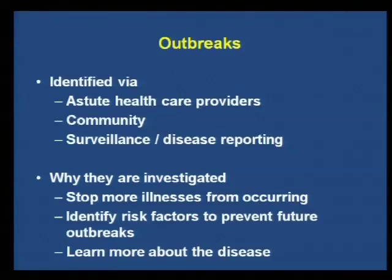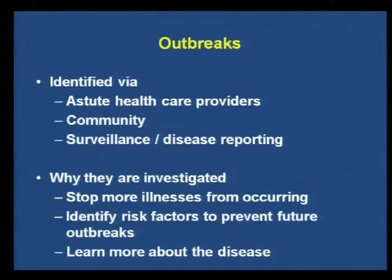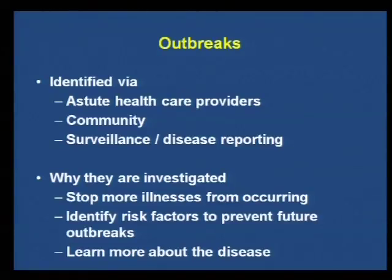Outbreaks are mainly identified a few ways. A lot come from astute healthcare providers like yourselves — if you've seen ten people today with diarrhea who all report eating at the same restaurant, give local or state public health a call. Also from the community — one recent outbreak came from a community member who noticed many friends had come down with illness. That turned out to be a Clostridium perfringens outbreak; most of our outbreaks are norovirus, but that was a bacterial toxin. We also identify outbreaks through surveillance and disease reporting via the reportable disease list.